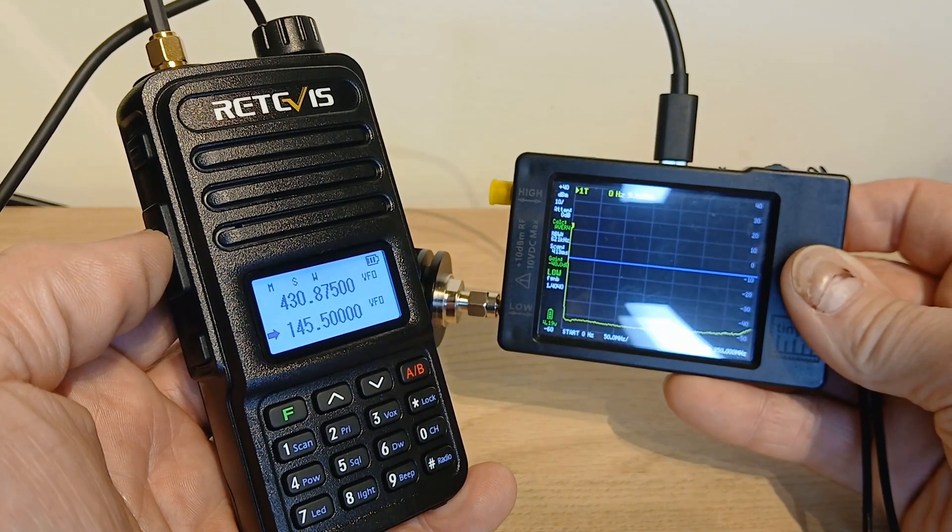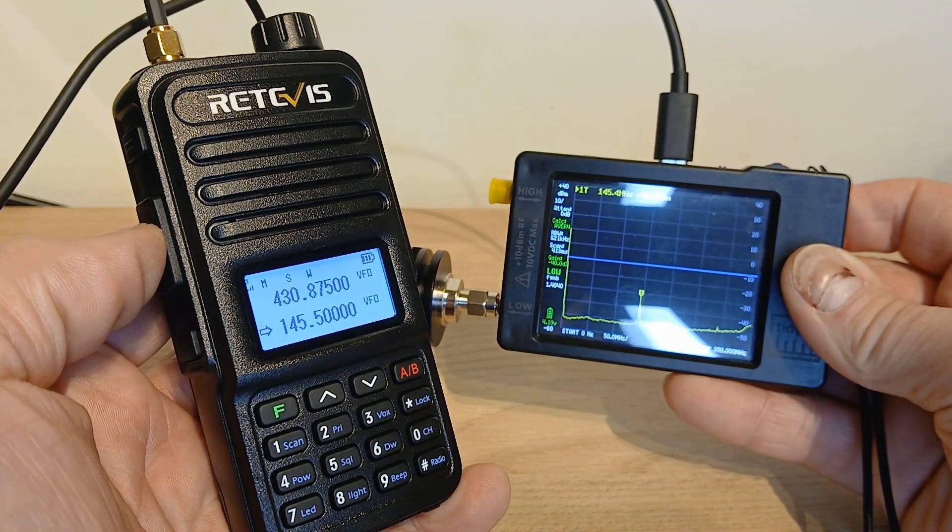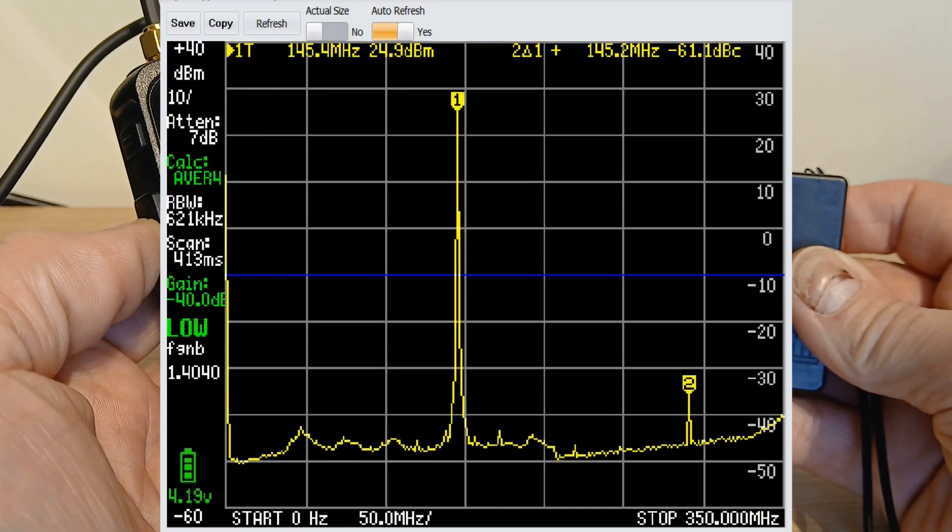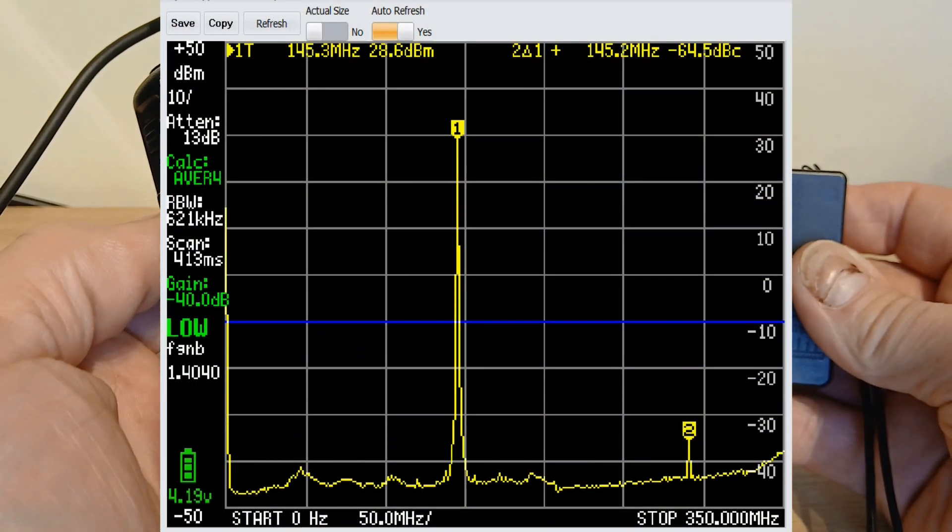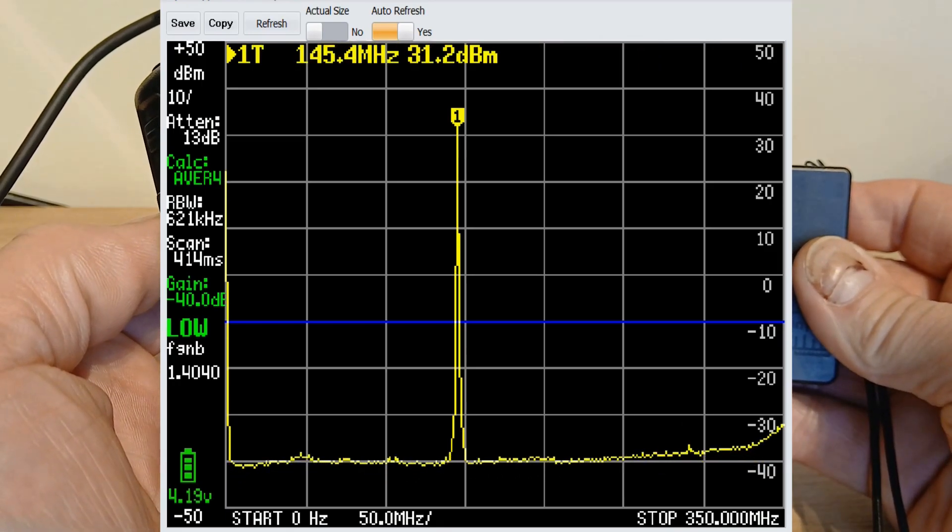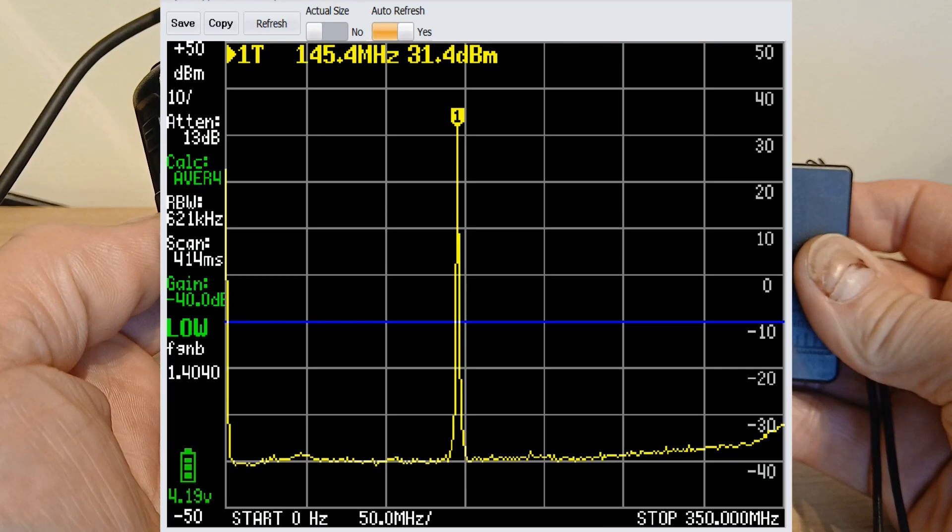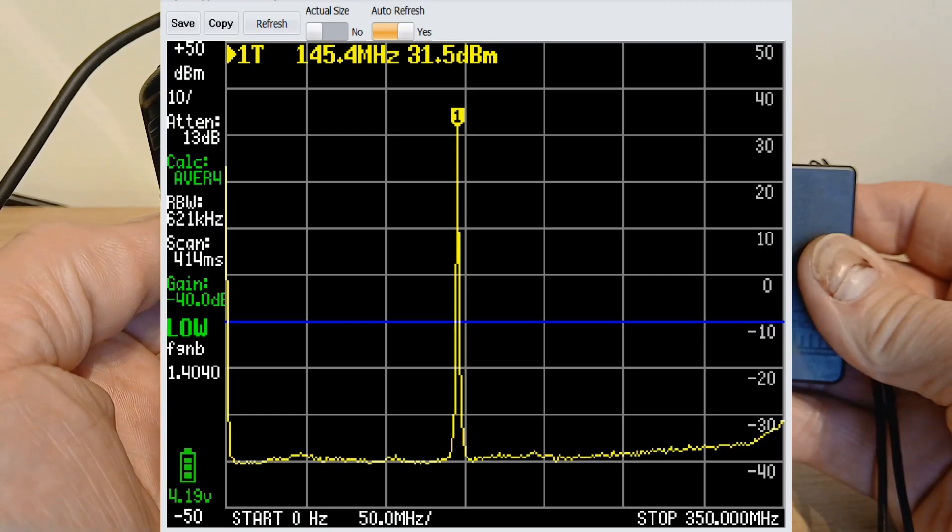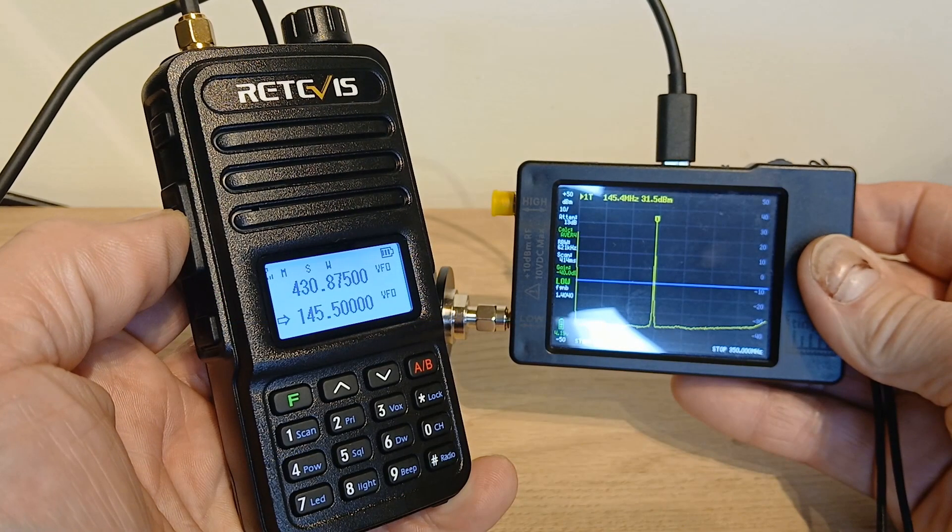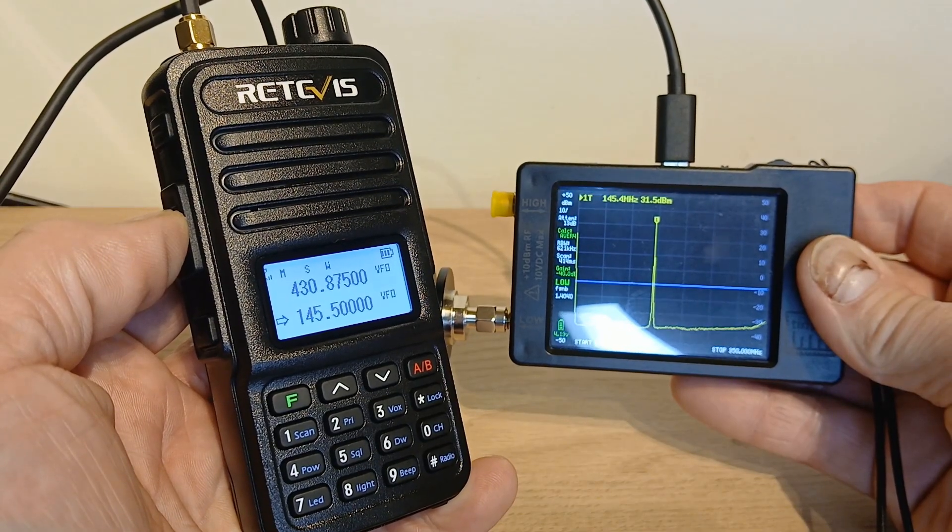Let's move on to the Retevis. This time we've got the Retevis RT85. And straight away, as soon as I key the PTT, you can see we've got a good clean radio here. That harmonic disappears straight away. The fundamental is plus 31.5 dB and the minute harmonic that was there has disappeared altogether. So again, another really nice clean radio there by Retevis.